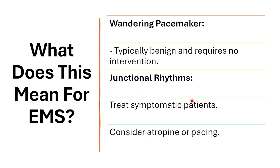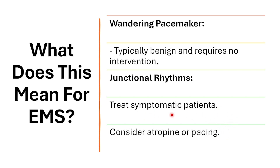For EMS, a wandering pacemaker is typically benign and doesn't require intervention. For a junctional rhythm, treat the patient, not the monitor. Consider whether the patient is symptomatic — are they experiencing altered mental status? Depending on local protocols, you may want to consider atropine or pacing. If considering pacing, contact medical control. It all depends on whether the patient is symptomatic.